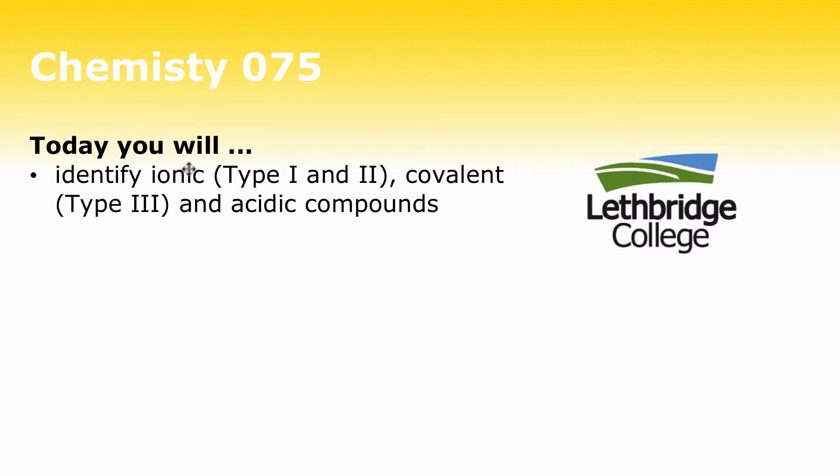So we're doing two types of ionic compounds, type 1 and type 2, and then covalent compounds, or type 3, and acidic. We're just identifying them. In other videos, we'll show how to name and write formulas for them.